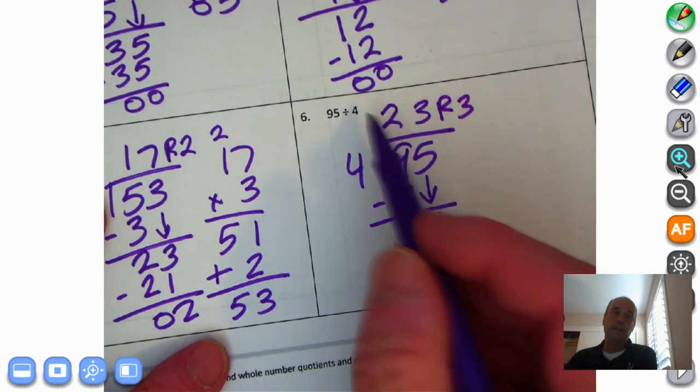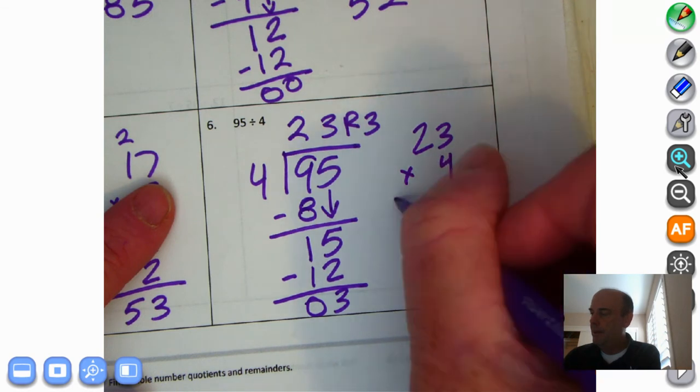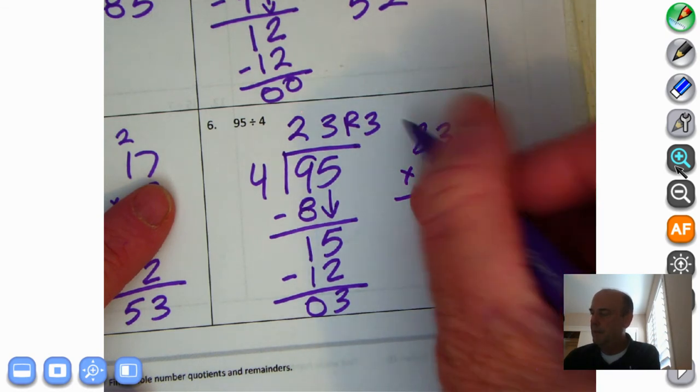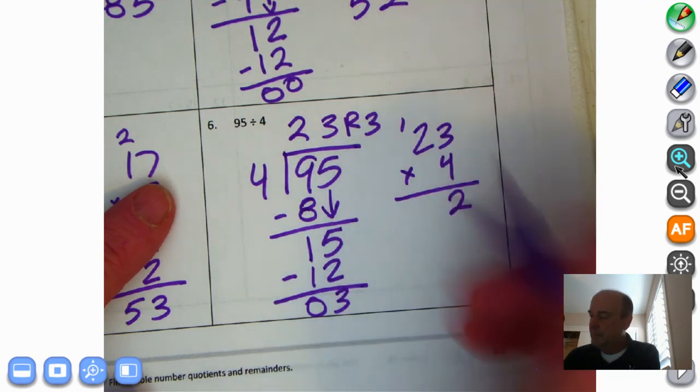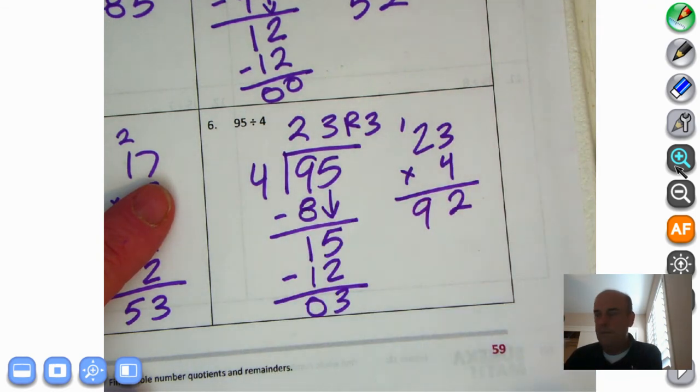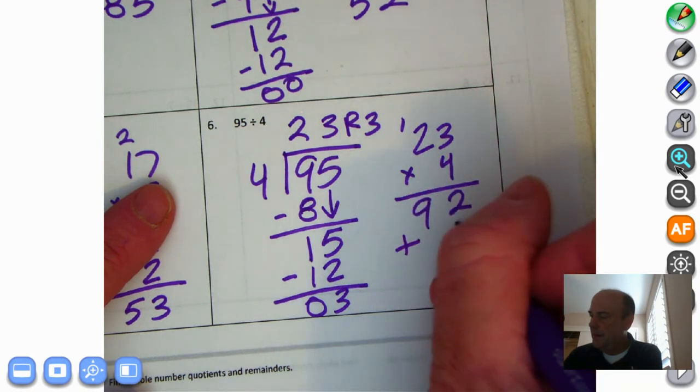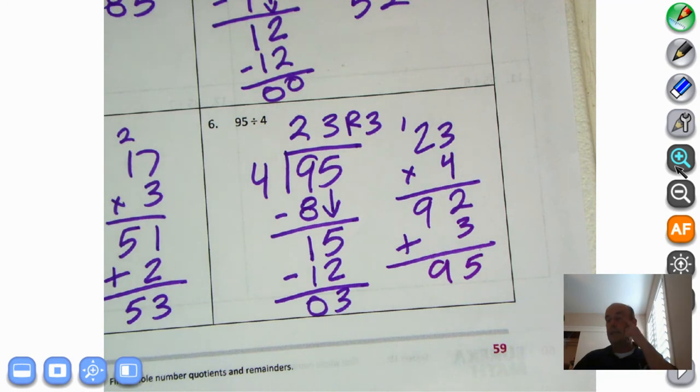Let's check. We're going to take the quotient and multiply it by the divisor. 23 times 4. 4 times 3 is 12. 20 times 4. 2 times 4 is 8, plus the 1 is 9. We have 92. That's not the same. Oh, we've got to add the remainder, right? Plus 3. 2 plus 3 is 5. Bring down the 9. We have 95. And that is the correct answer.